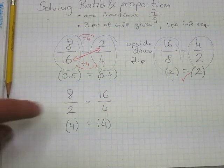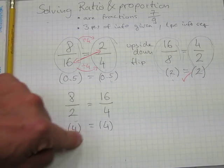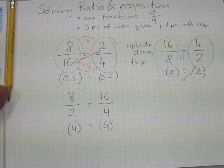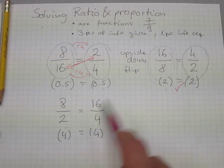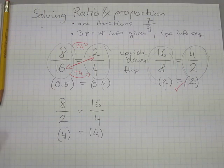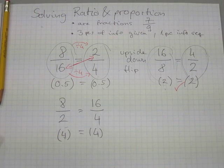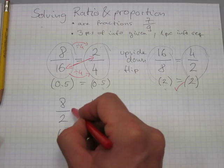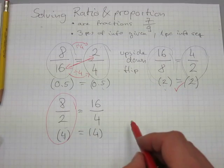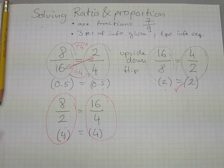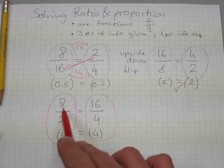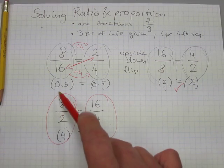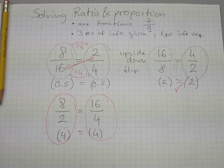And 16 divided by 4 is also 4, so the amounts are preserved on both sides. We have totally new amounts — 4 on each side — but all I'm concerned about for solving ratio and proportion is that this amount be exactly the same as this amount. I'm only relating the numbers 2, 8, 4, and 16 with each other.